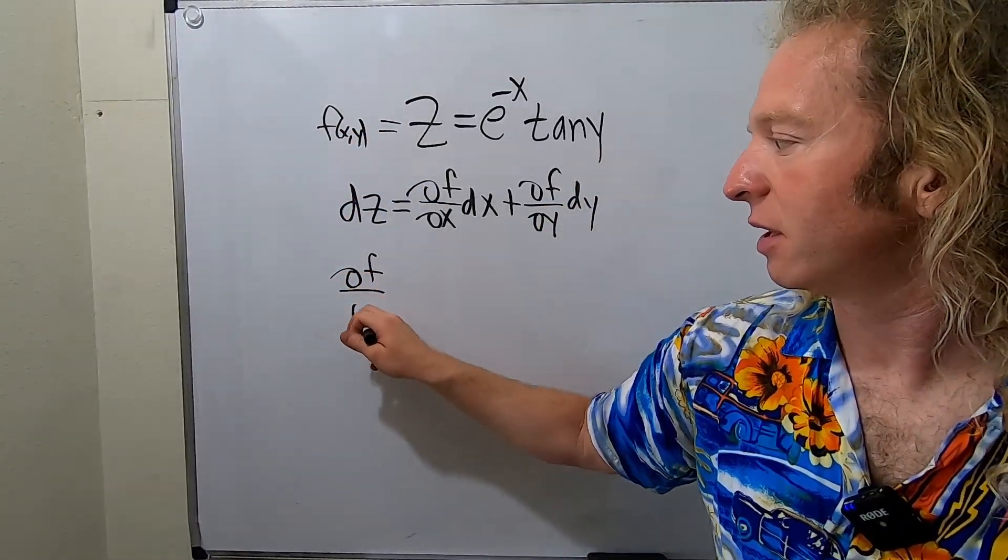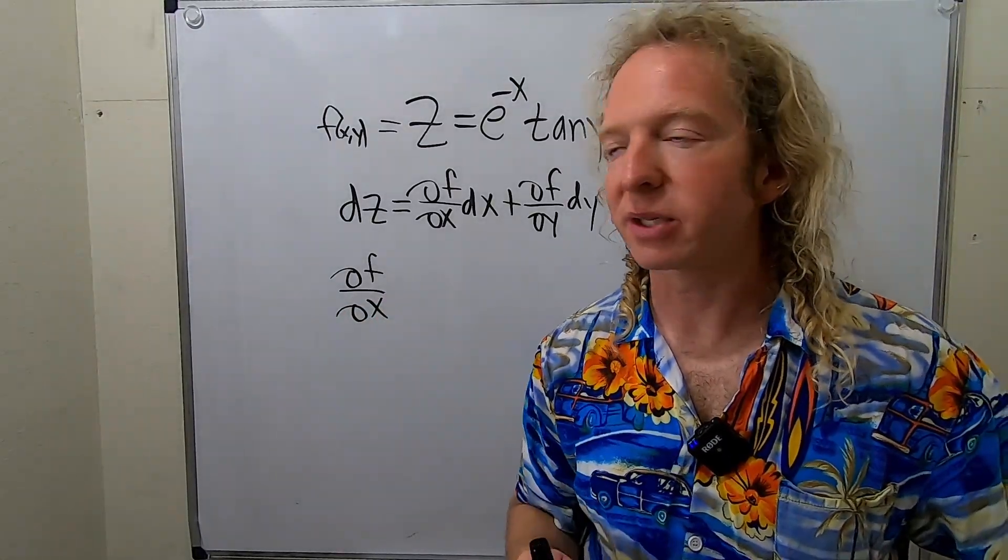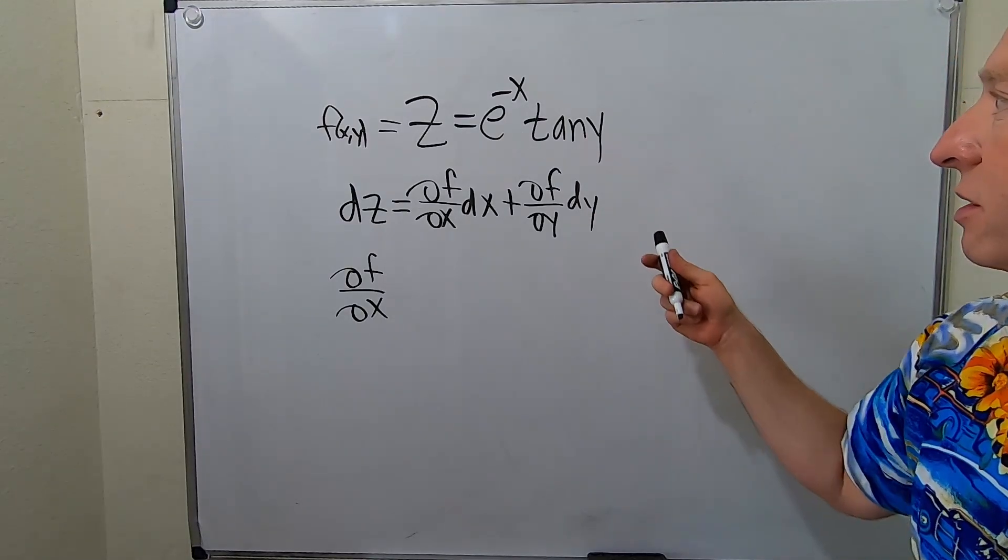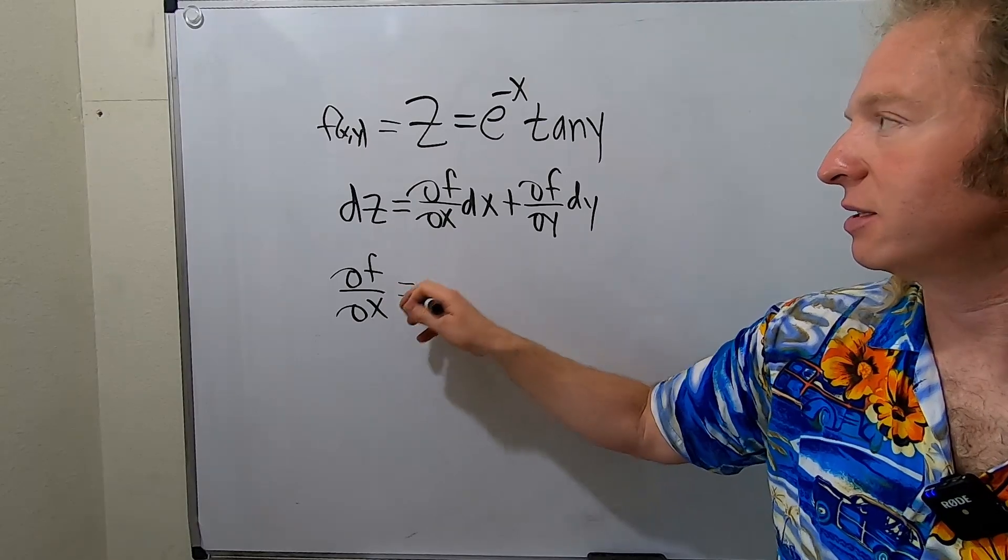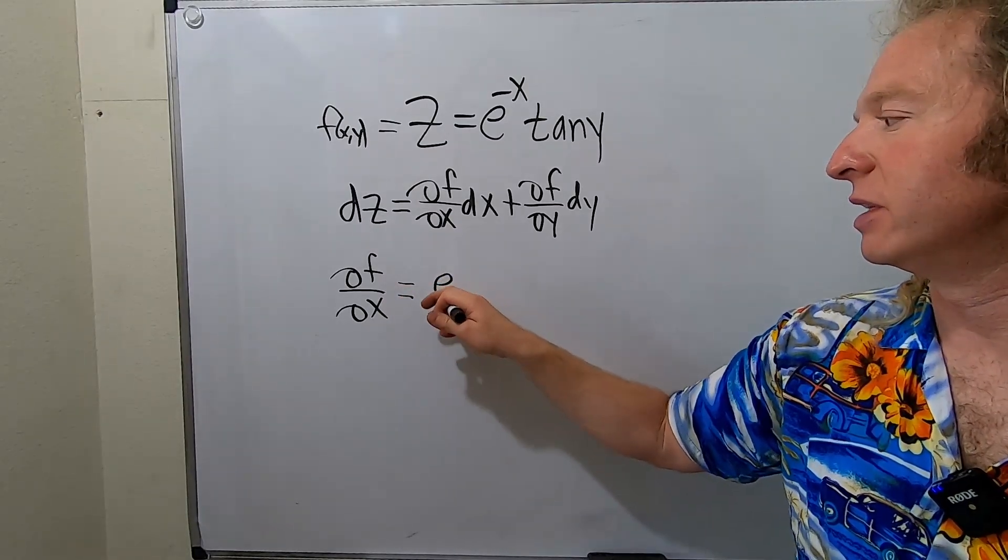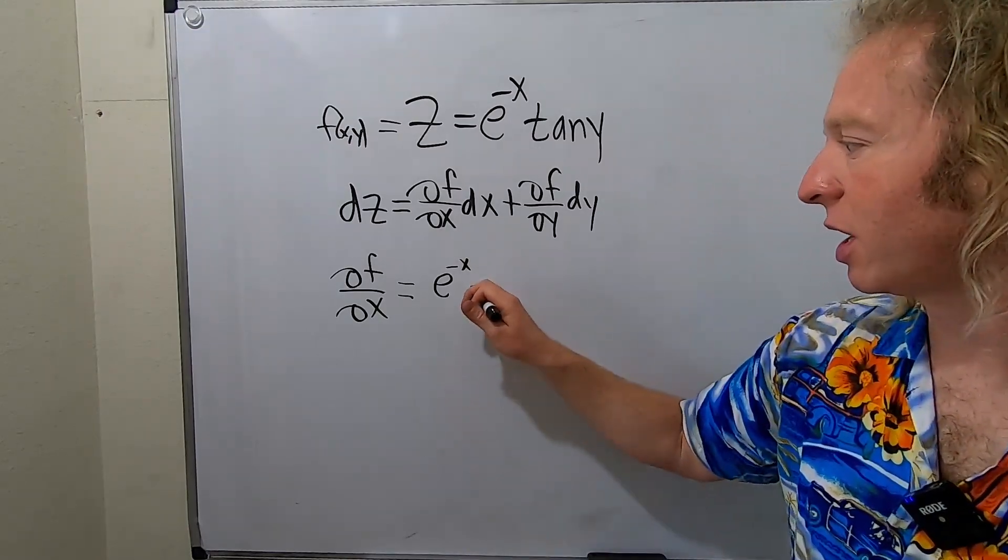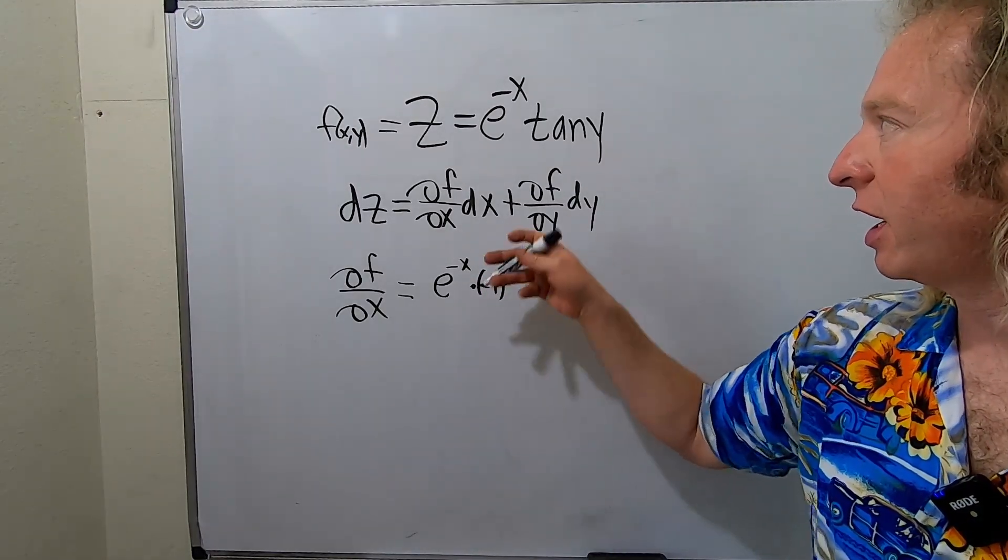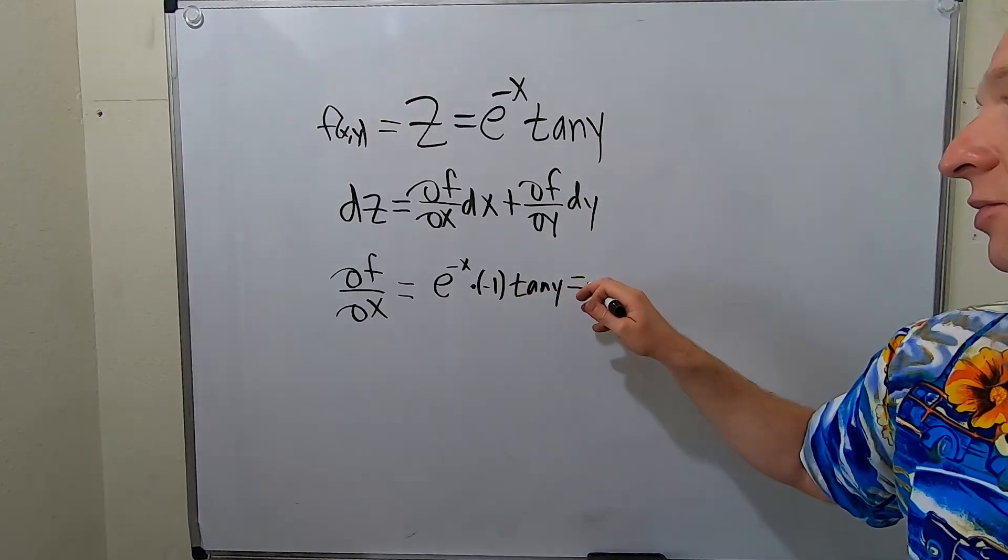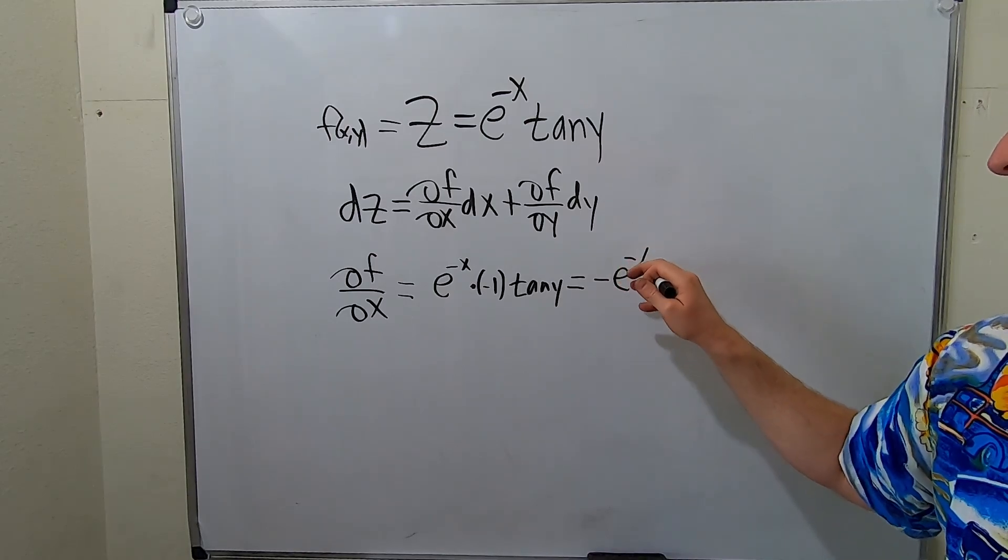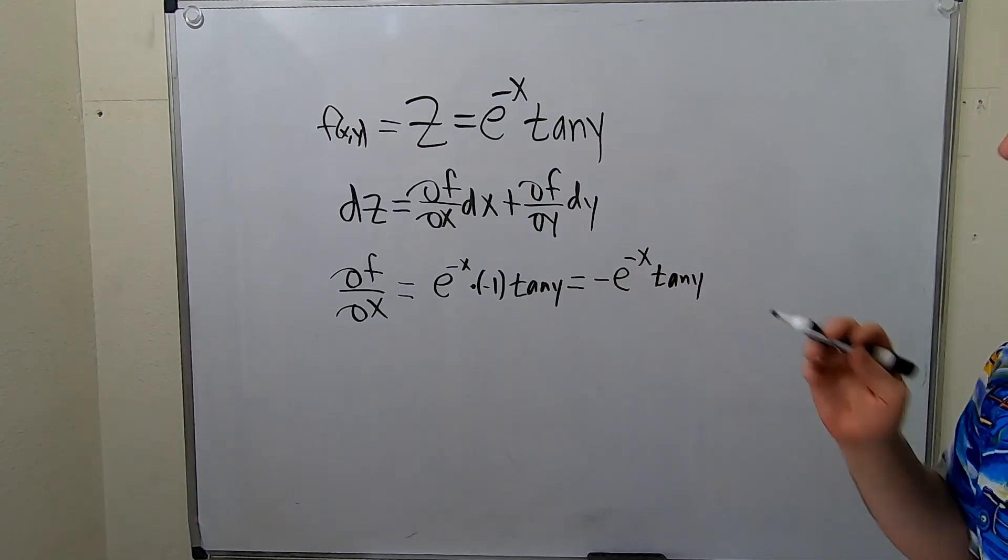So when we're taking a partial derivative with respect to x, we treat all of the y's as constants. So the tangent of y just hangs out. The derivative of e^x is e^x, so it'll be e^(-x) times the derivative of the inside from the chain rule, so times negative 1. And this tangent function is a constant, it just hangs out. So this is equal to -e^(-x)tan(y). So that's ∂f/∂x.